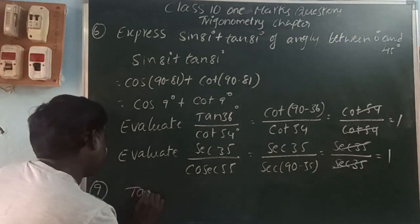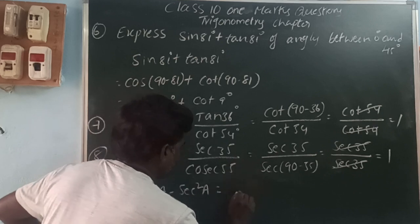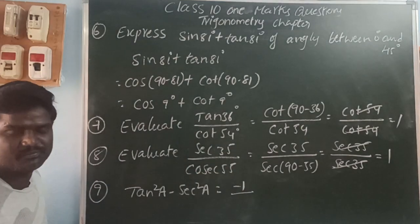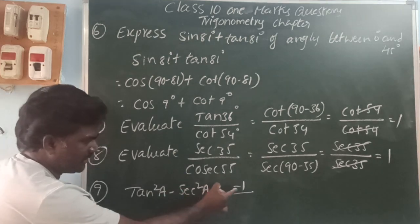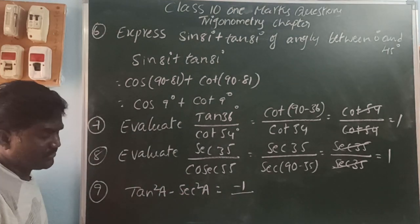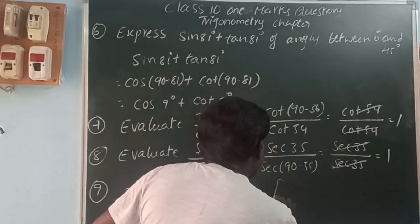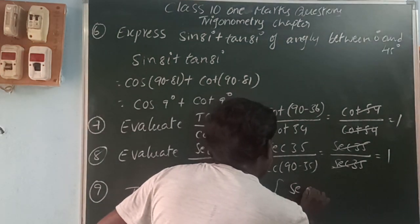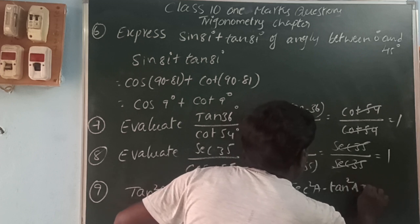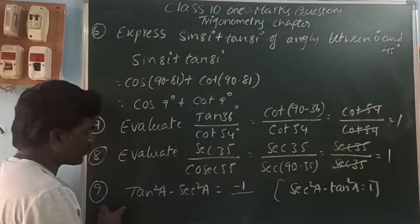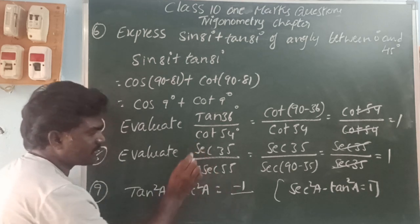Next: find the value of tan squared A minus sec squared A. Using the trigonometric identity, sec squared A minus tan squared A equals 1. So tan squared A minus sec squared A is the reverse, which equals minus 1.